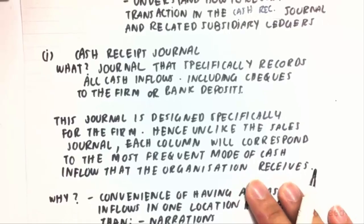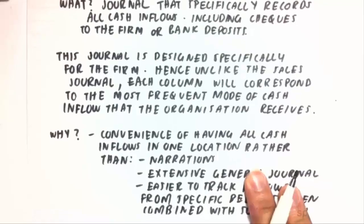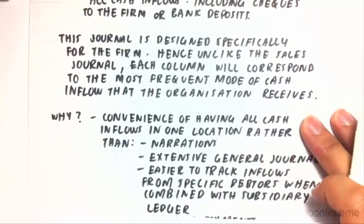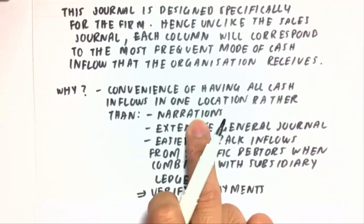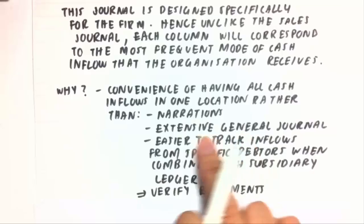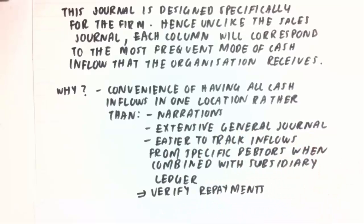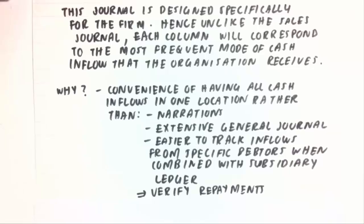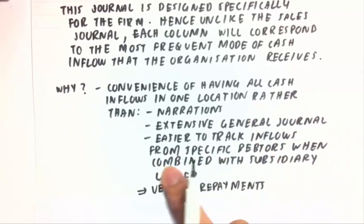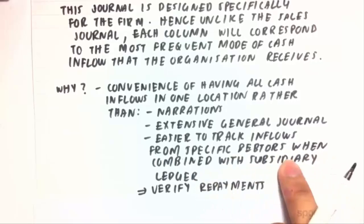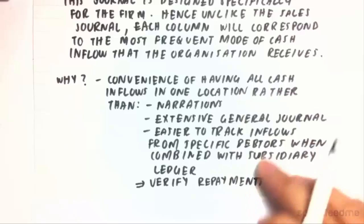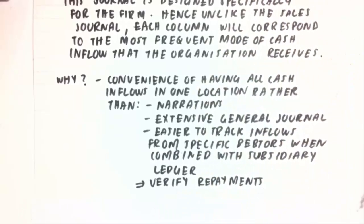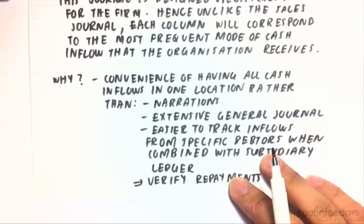So why do we use this? It's the convenience of having all cash inflows in one location rather than them all being in a muddled-up general journal. There's no need for narrations anymore. An extensive general journal makes it difficult to track down any inflows, especially when you have a multitude of different journal entries on certain days. It's easier to track inflows from specific debtors when we have a subsidiary ledger as well. And we can also use the cash receipt journal to verify any repayments that have been made — we can look through it and see if a debtor did, in fact, pay us on a given day.